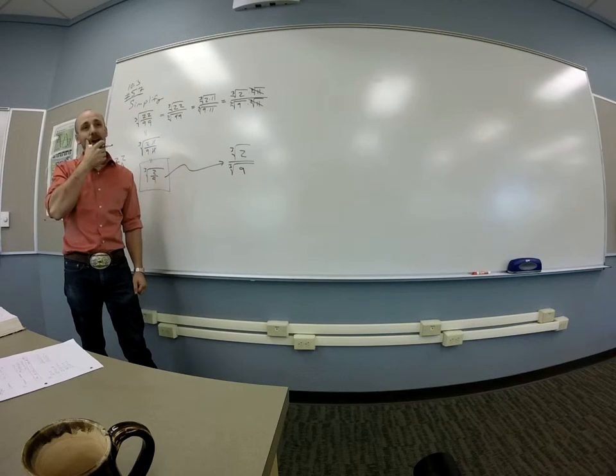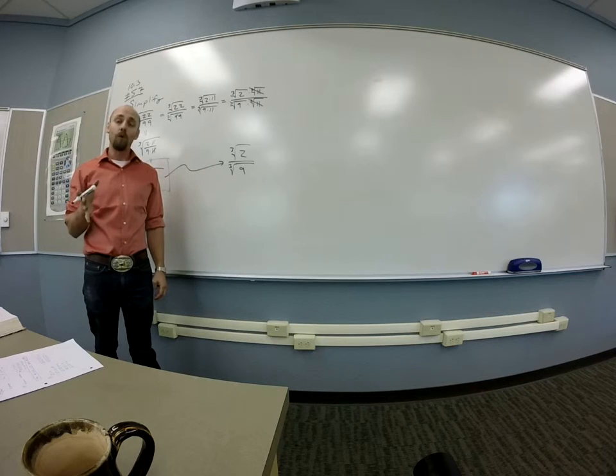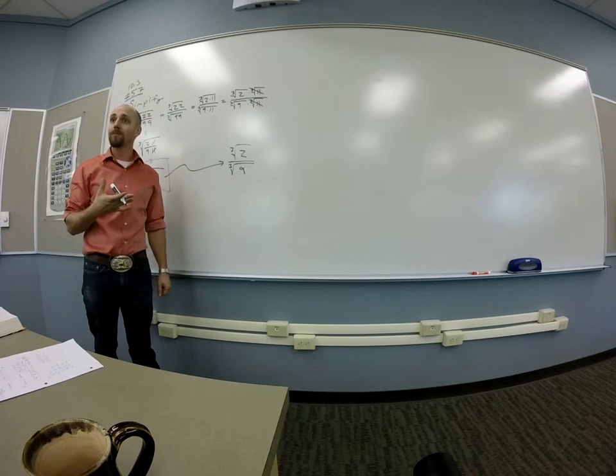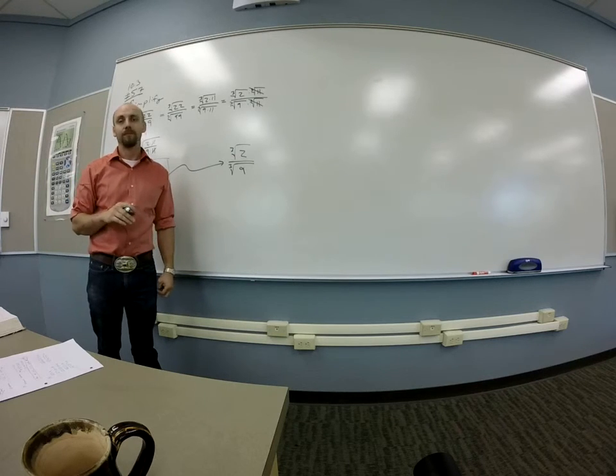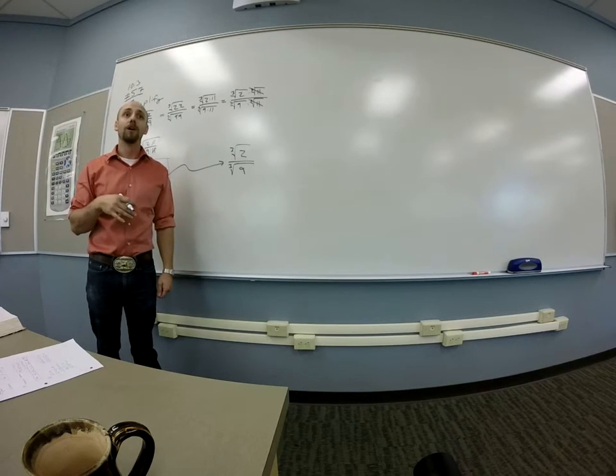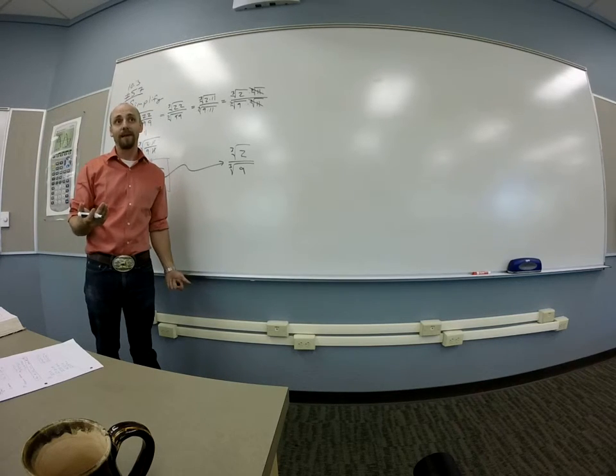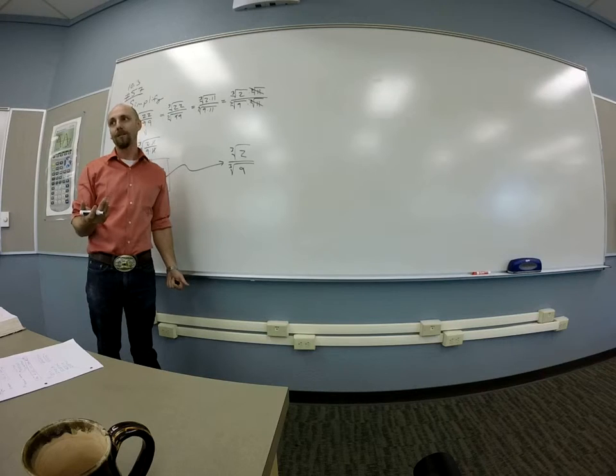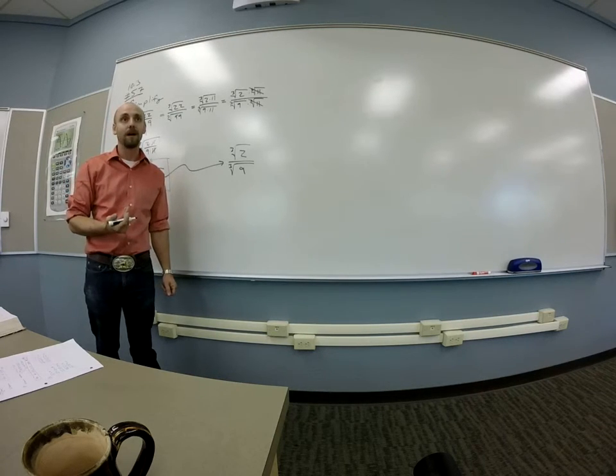They're saying, okay, you could, if you wanted to get the cube root out of the bottom, the reason for this was a pre-calculator thing. But if you wanted to get the cube root out of the bottom, you could multiply this thing by something so that the cube root would go away. At least in the bottom. You're going to pay for this. You're going to get some other more complicated stuff in the top.